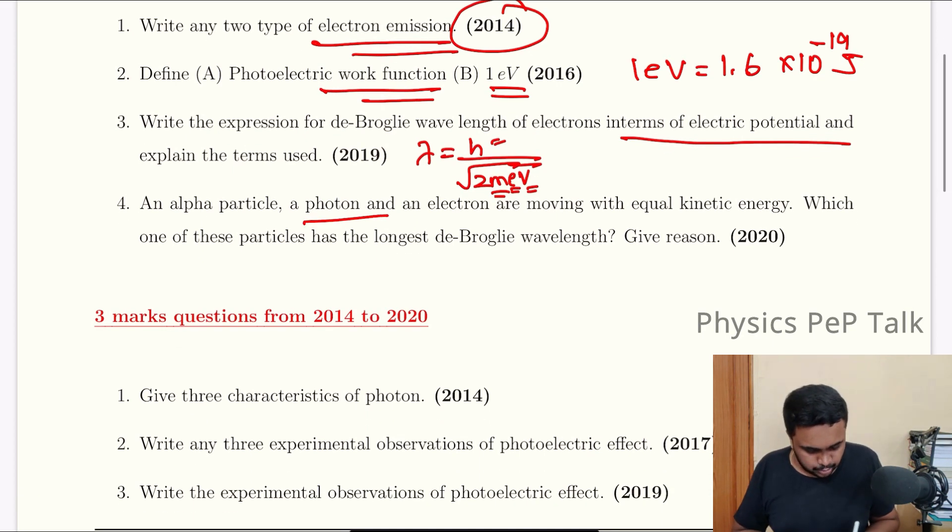An alpha particle, a photon and an electron are moving with equal kinetic energy. Which of these particles have the longest de Broglie wavelength? That is the question. This is kinetic energy.